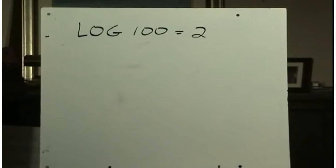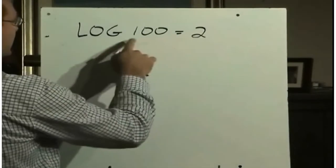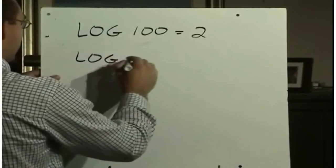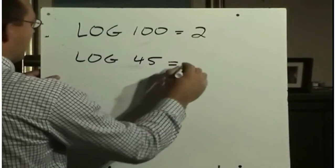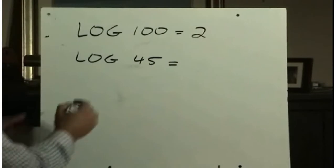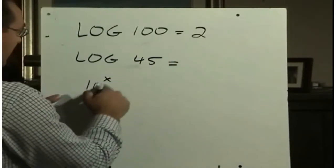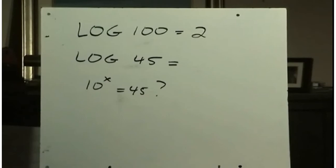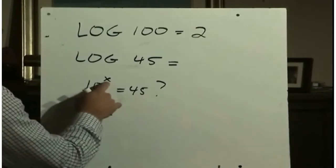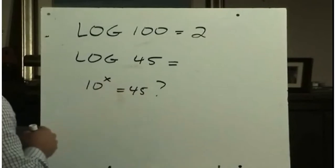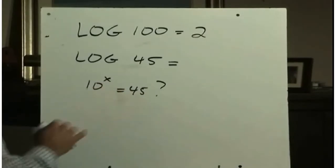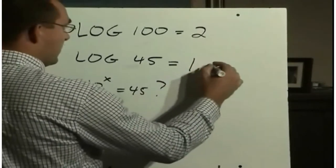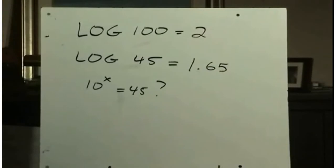So we already know that log 100 is 2, because 10 squared is 100. What if we had to figure out what the log of 45 is? Well, we'd be asking ourselves, what is the exponent on 10? What power of 10 would be equal to 45? We don't really know what that would be. We can't do it in our head. We know that 10 squared is 100, so that's too big. And 10 to the power of 1 would equal 10. So it's got to be somewhere between 1 and 2. If you go to your calculator, punch in log 45, and hit equals, you'll see that this is, to two decimal places, about 1.65.